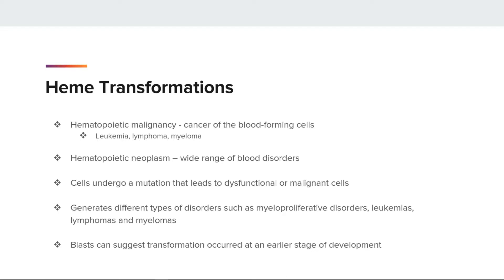Abnormal younger cells are referred to as blasts, and these can suggest the cancerous transformation occurred in a blood forming cell that was at an earlier stage of development. If the cells are more mature, then this suggests the transformation happened to a more mature cell.